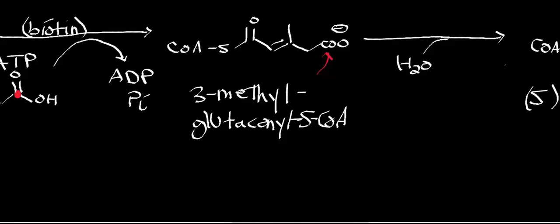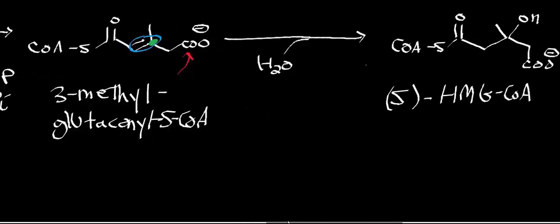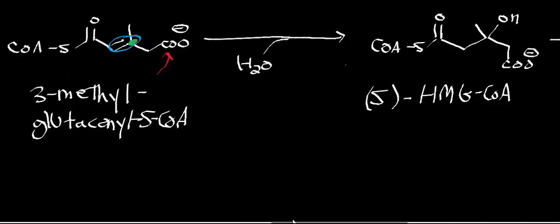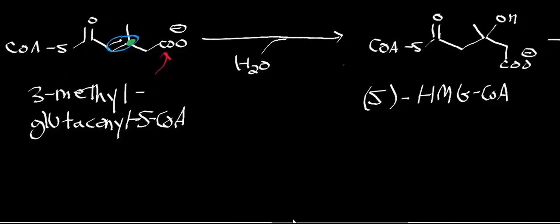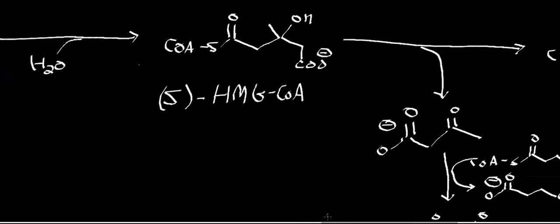Next, we're going to hydrate this double bond — this alkene — and specifically the carbon being hydrated is highlighted here. The enzyme is 3-methylglutaconyl-S-CoA hydratase, and when we do that, it gives us hydroxymethylglutaryl coenzyme A — HMG-CoA. Specifically, this carbon is the S-isomer.